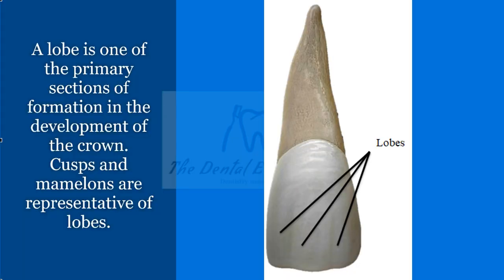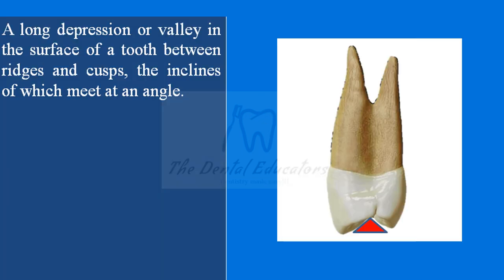The sulcus is a long valley on the surface of a tooth between ridges and cusps that incline and meet at an angle. The red marked area represents the hollow surface between two cusps, which is referred to as the sulcus.